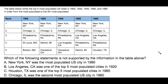We can use process of elimination for this, which is a good strategy to use for the test. A — New York, New York was the most populated city in 1980. Checking the 1980 category, the number one ranking city was New York, New York, so this is a true statement. For B, LA was one of the top five most populated cities in 1920 — I don't see LA in the top five, so this statement is not supported by the table. B is the right answer.